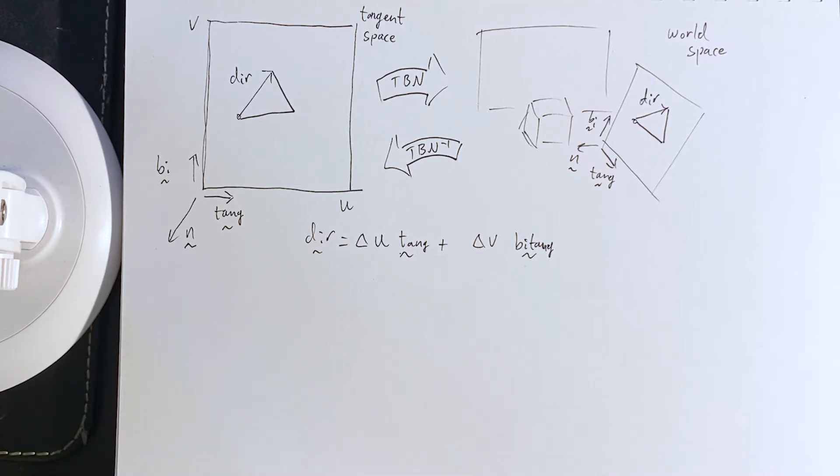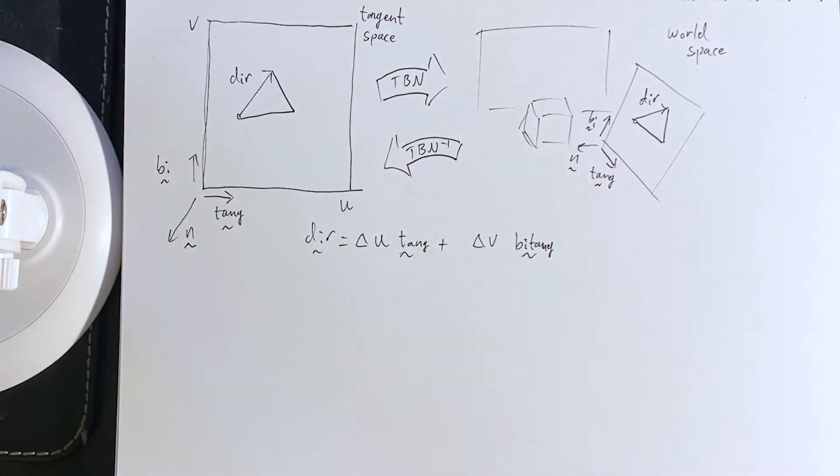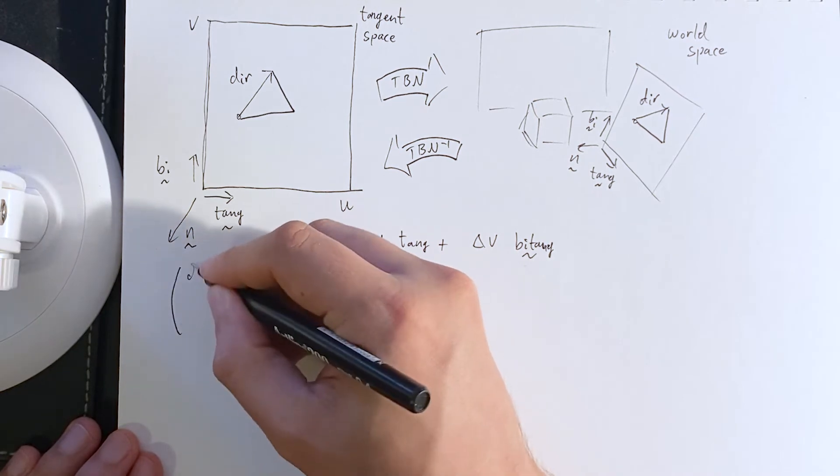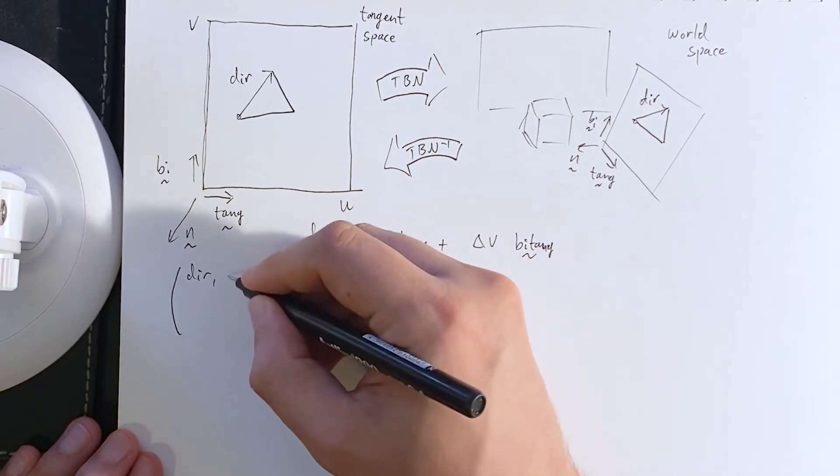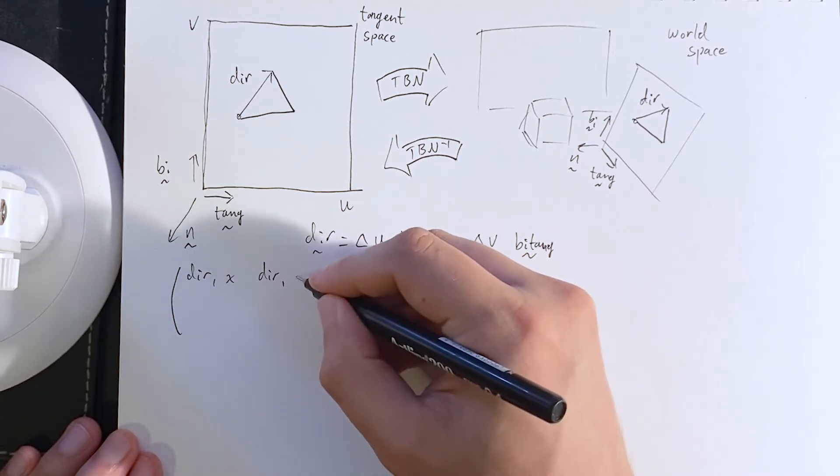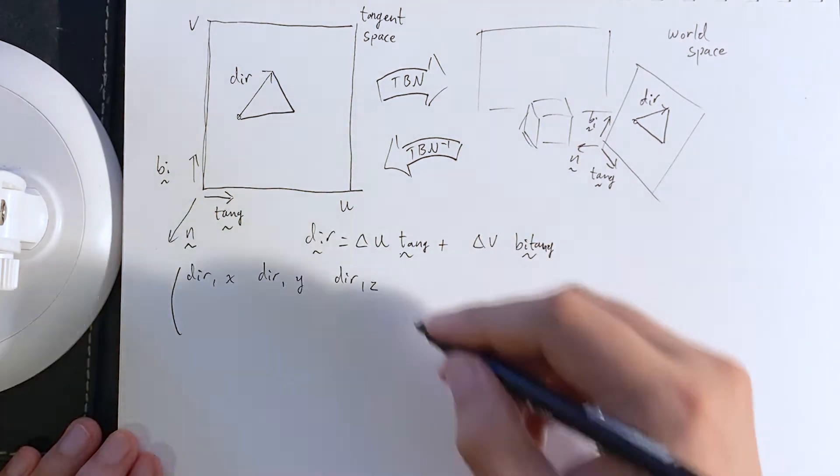And what we're going to do is we're going to actually take two directions in order to set up a system of equations. So, if I just had one direction, we could say, okay, the direction X component, Y component, Z component.